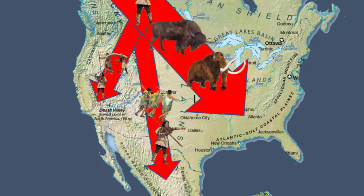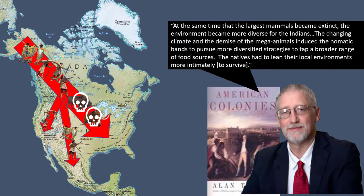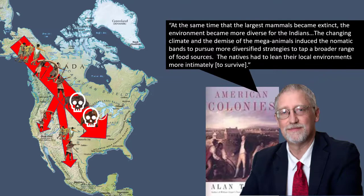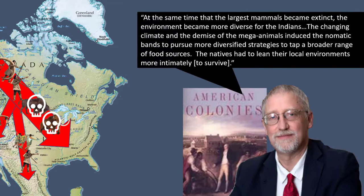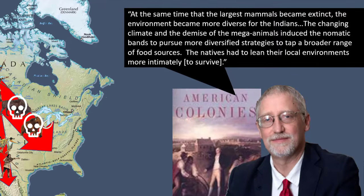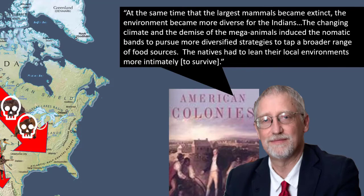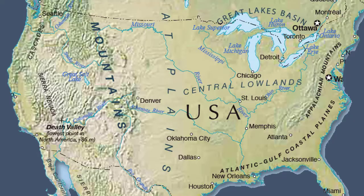The rapidly changing climate would eventually lead to the extinction of large game animals and required the Native Americans to increase their interaction with their environment in order to survive. As historian Alan Taylor notes, at the same time that the largest mammals became extinct, the environment became more diverse for the Indians. The changing climate and the demise of mega animals introduced the nomadic bands to pursue more diverse strategies to tap a broader range of food sources. The natives had to lean on their local environments more intimately to survive.